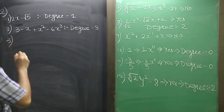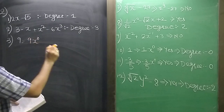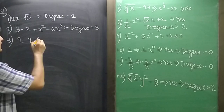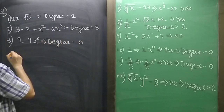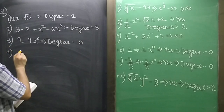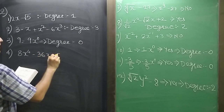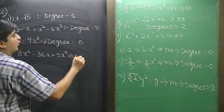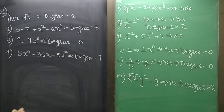Sum 3: 9. This can be written as 9x raise to 0, just as we saw in sums 10 and 11 earlier. So degree is 0. Sum 4: 8x raise to 4 minus 36x plus 5x raise to 7. The degree is 7 because the maximum power is 7.